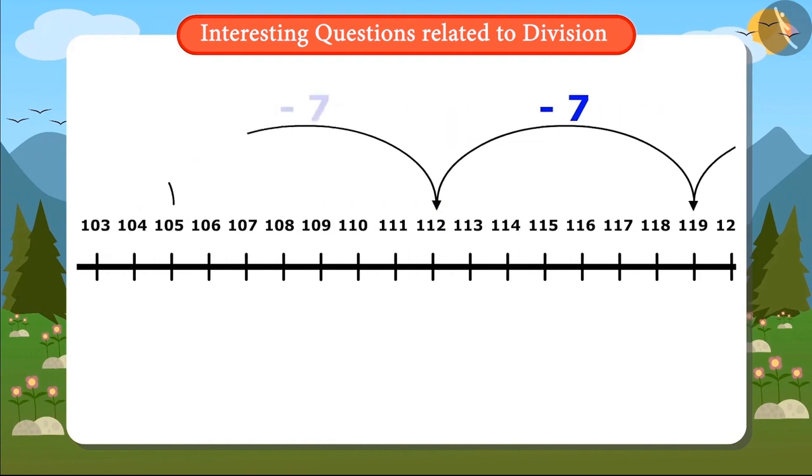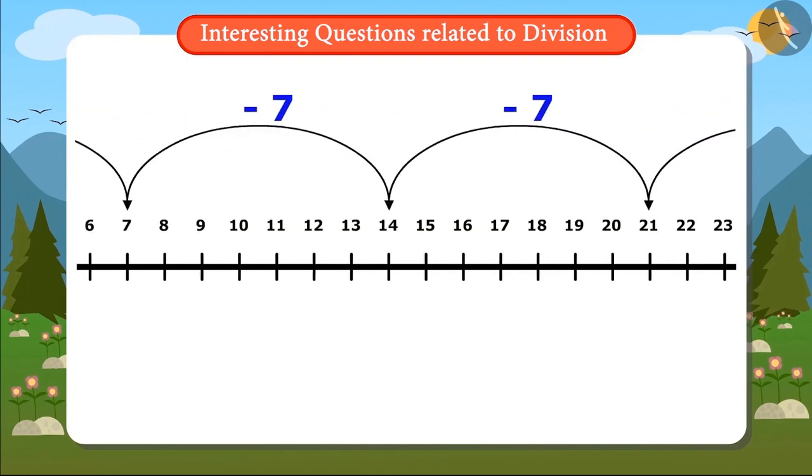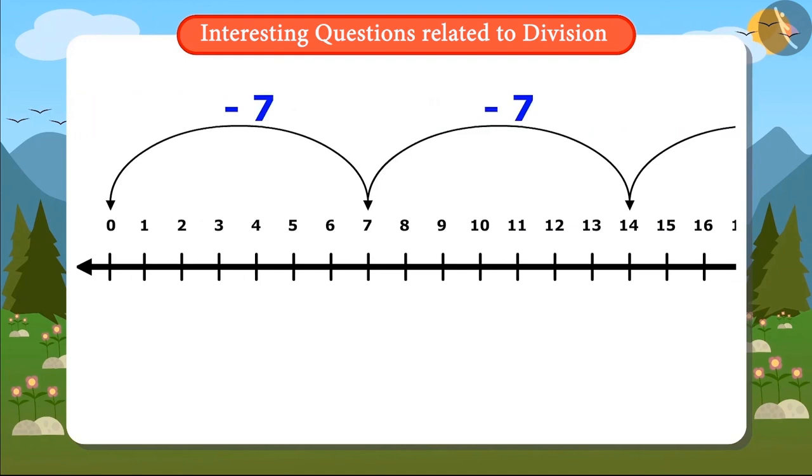Likewise, I will keep subtracting 7 on this number line till I reach the figure 0. Once I reach the digit 0, that will mean all my pocket money is spent.